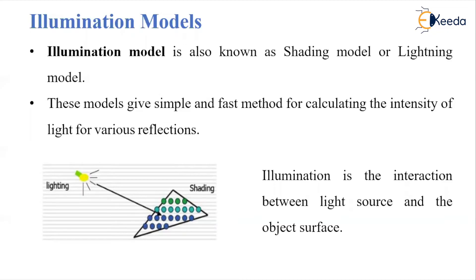An illumination model is also known as a shading model or a lighting model. These models are very simple and fast for calculating the intensity of light for various reflections. Whenever light — whether normal light or sunlight — falls on any surface, it gets reflected in a certain direction. Depending on that, these illumination models are categorized.